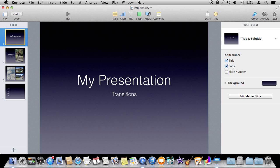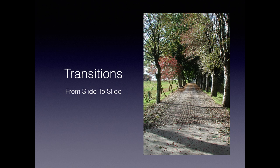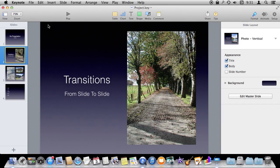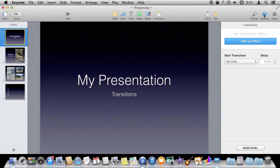Now that we have some slides, let's look at adding a transition between them. If I were to hit Play right now while I'm on slide one and I hit the spacebar or click, I just go directly to the second slide. So let's add a transition. I'm going to select the first slide here and over on the right I'm going to go to Animate and I'm going to Add an Effect.